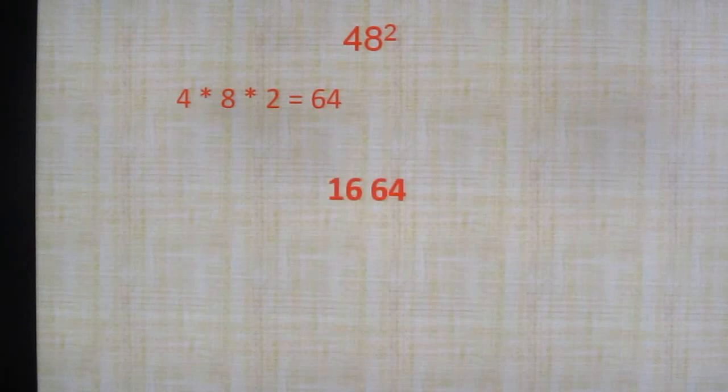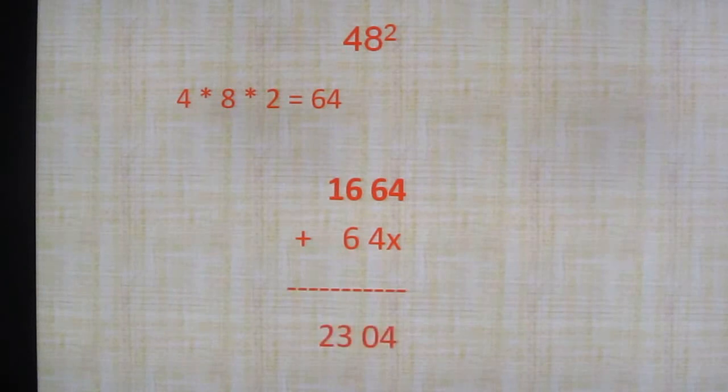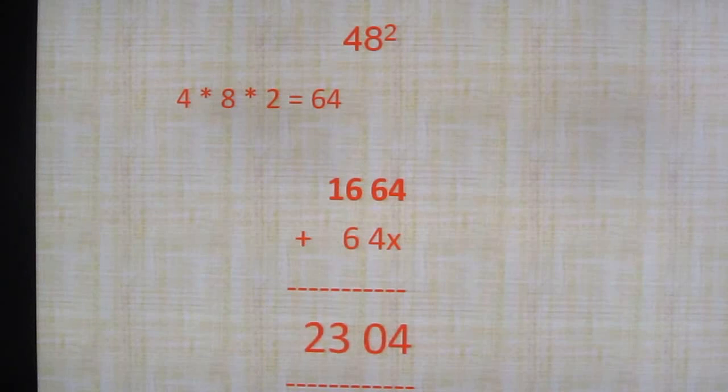So 16 and 64, that is 4 square and 8 square I have written there. Then next 64 should be written like this because near to the X there should not be any gap. So once I add up, what I will be getting is 2304. So 48 square is 2304.